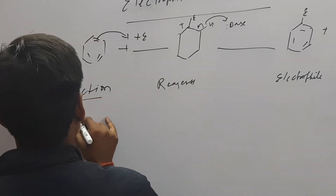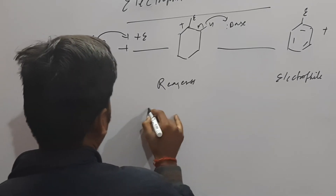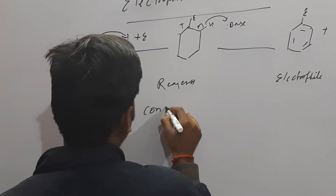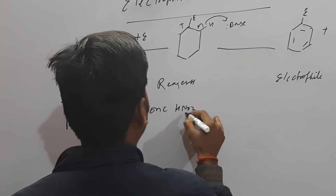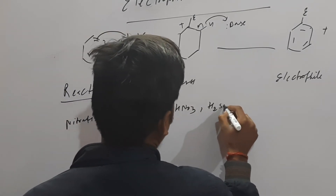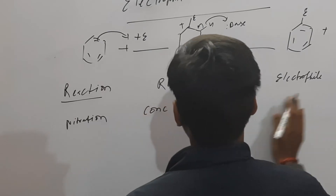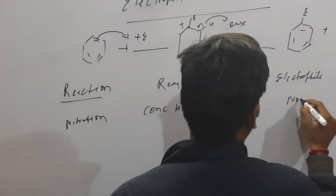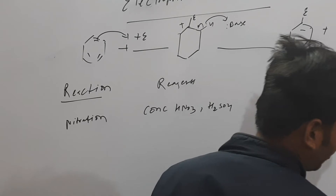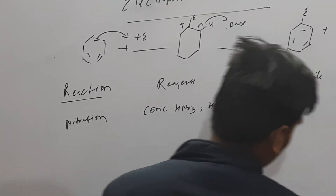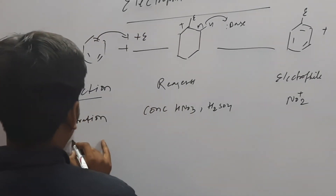Nitration के लिए Conc. HNO3 और H2SO4 होना चाहिए। तो क्या होगा यहाँ पे - जो बनता है Nitronium NO2+ यह Electrophile होता है।